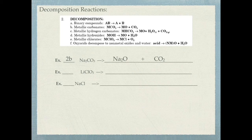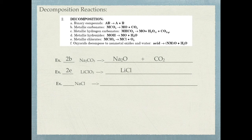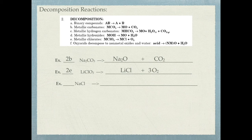For lithium chlorate, since it contains chlorate, it's a 2E reaction — it forms lithium chloride plus oxygen. Li has a plus one charge and Cl has a minus one charge, so the formula is LiCl plus O2. To balance: there are three oxygens on the reactant side and two on the products side, so put a three in front of O2 and a two in front of LiCl.